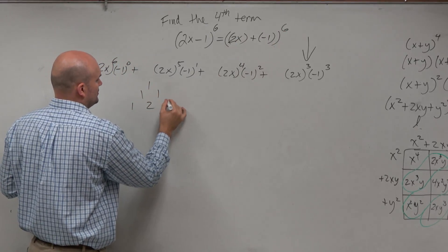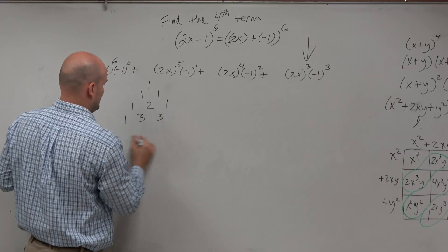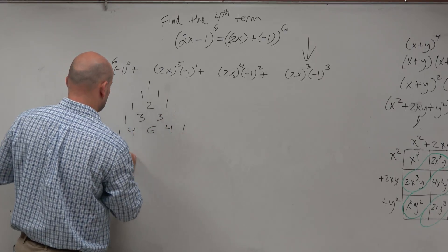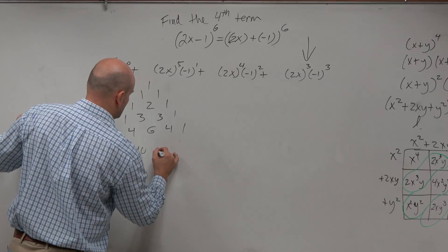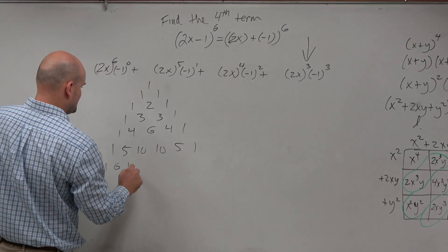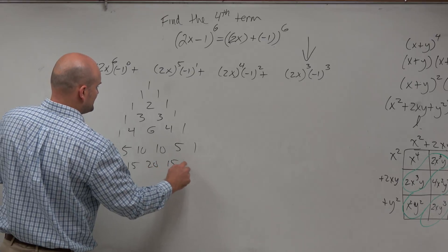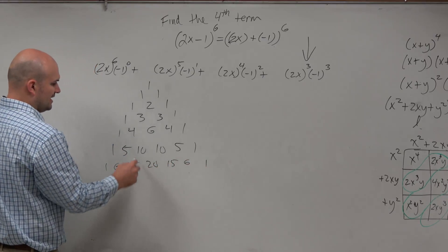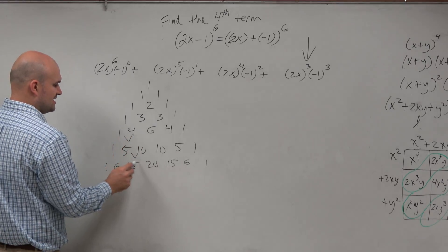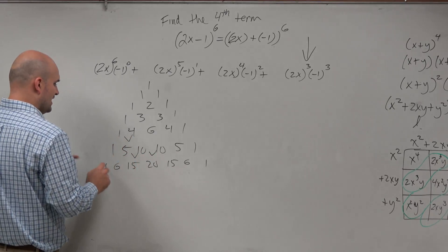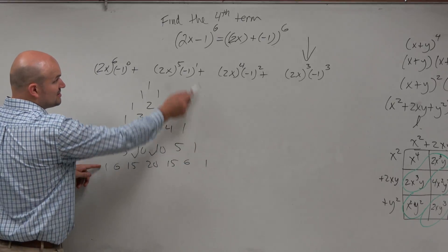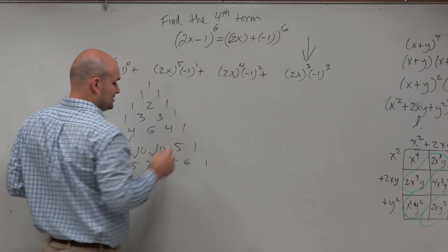So let's create Pascal's triangle real quick, even though I have it on the board next to me. The fifth row is: 5, 10, 10, 5, 1. Then the sixth row: 1, 6, 15, 20, 15, 6, 1. Remember, guys, you're just adding previous terms to get to the next one — so 5 plus 10 is 10, 10 plus 10 is 20. And you can see there are 7 terms, giving you the binomial to the sixth power.